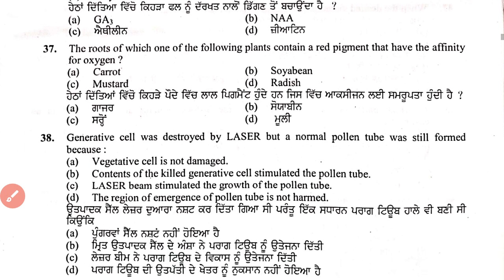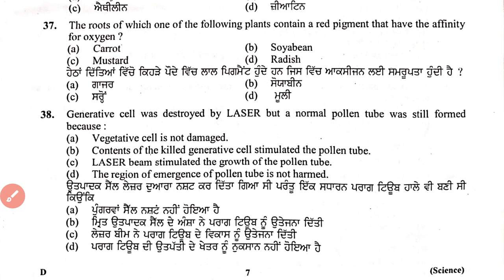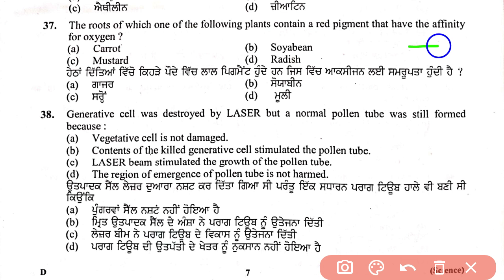Another question asks: which of the following plants contain a red pigment that has affinity for oxygen? The answer is carrot.